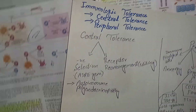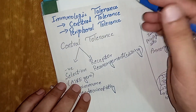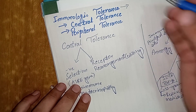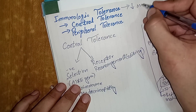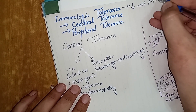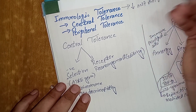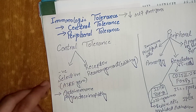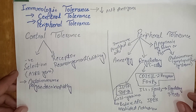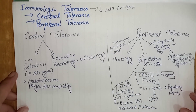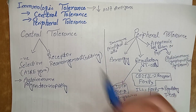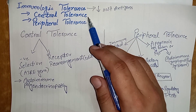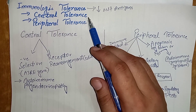Tolerance is a phenomenon in which the body's immune system does not recognize self-antigens. There are proteins in the body but our lymphocytes do not recognize them and do not produce any response against them. This is called immunological tolerance, and it can be central tolerance as well as peripheral tolerance.